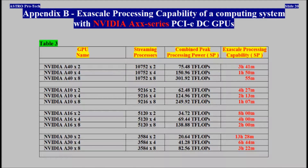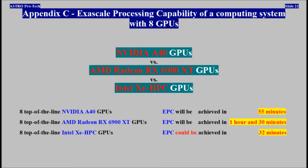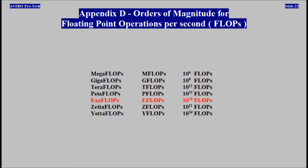Appendix B covers the exascale processing capability of a computing system with NVIDIA X-Series PCIe DC GPUs. Appendix C covers the exascale processing capability of a computing system with 8 GPUs. Appendix D covers orders of magnitude for floating point operations per second.